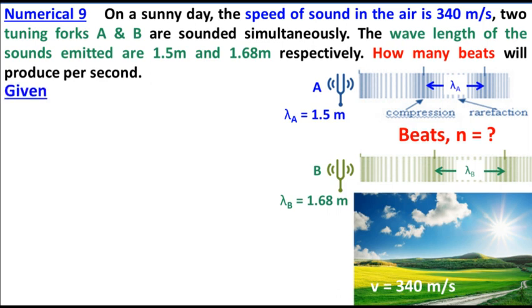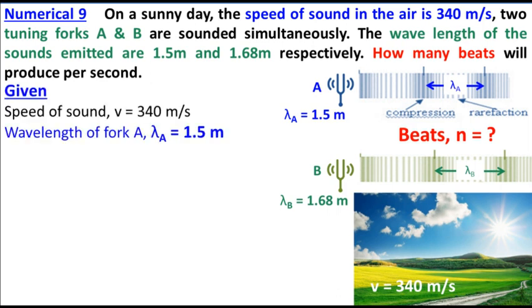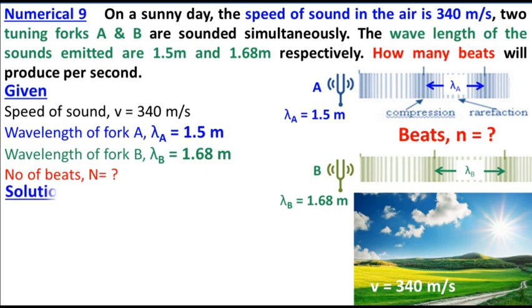It's a very simple question. What is the speed of sound given? The wavelength of fork A given is lambda A. The wavelength of fork B given is lambda B. The number of beats, capital N, is what we need to find.